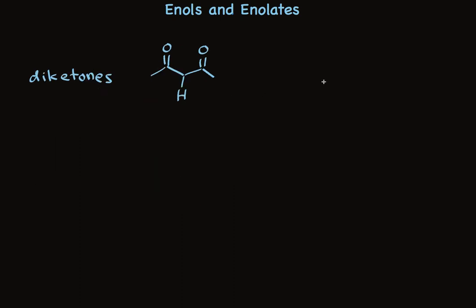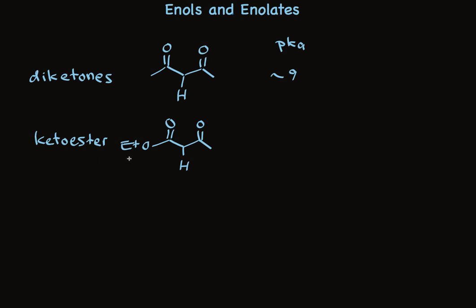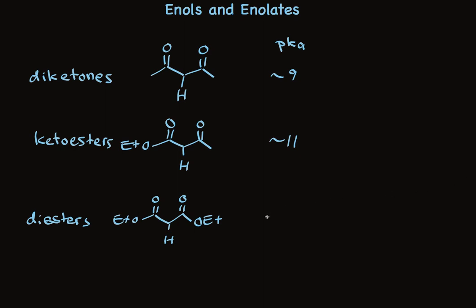Diketones are about pKa 9. When one of the carbonyls is an ester, it's less acidic. Keto esters are about pKa 11. The diester is about 13. The special stability of the beta-dicarbonyl compounds is easily explained by noticing that there are two resonance structures, not just one, that put the negative charge on oxygen.